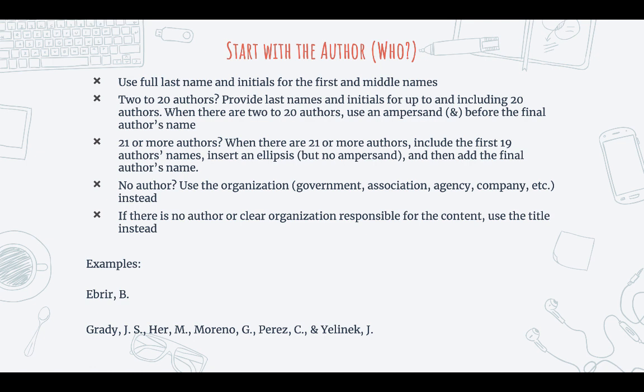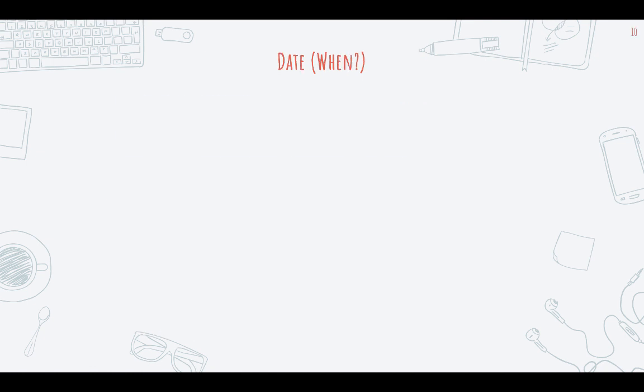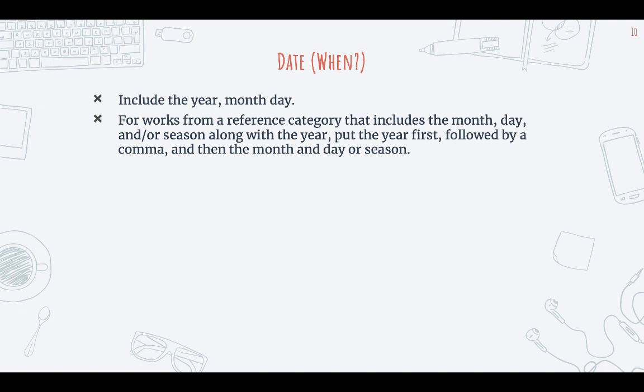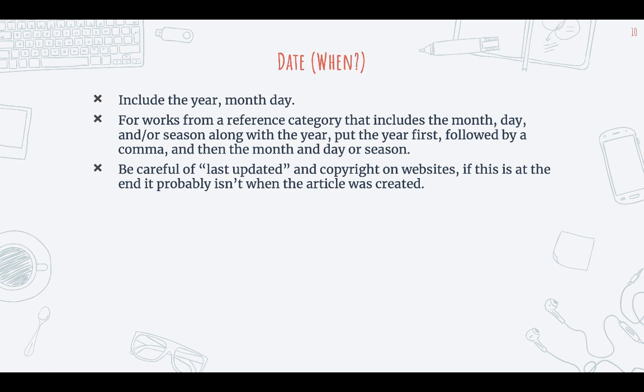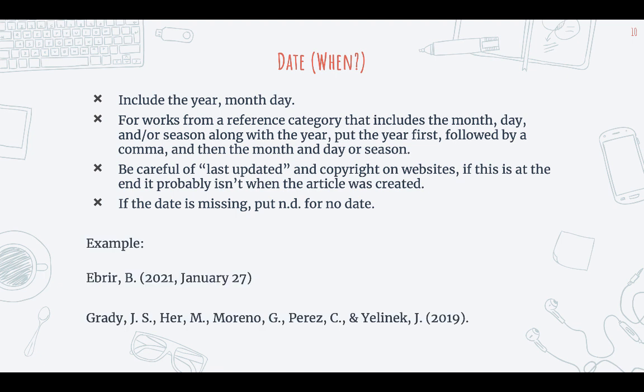Next, with APA citations, you're going to put the date. You include the year, month, and day. For works with a reference category that includes the month, day, and/or season — such as spring, summer, or fall — along with the year, put the year first, followed by a comma, then the month and day or season. Be careful of 'last updated' and copyright dates on websites; if this is at the bottom of a page, it probably isn't when the article was created. If the date is missing, put n.d. for no date. Here are our two article citations with the dates included. You can see in the first one we include the year, the month, and the day. In the second one we just include the year because the article did not include a month or day of publication.